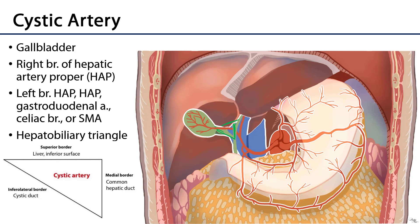There are instances where it does not pass through the triangle, but this is the most common place to look. One thing to note: this triangle is very frequently referred to as the triangle of Kahlo, but the hepatobiliary triangle is not technically the triangle of Kahlo. Kahlo's original description included the same medial and inferolateral borders, but the superior border of the triangle of Kahlo is actually the cystic artery itself. More often than not, people confound the hepatobiliary triangle with the triangle of Kahlo.